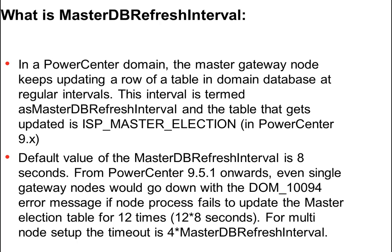From PowerCenter 9.5.1 onwards, even a single gateway node would go down with the DOM_10094 error message if the node fails to update the master election table 12 times — that is, 12 tries multiplied by 8 seconds. For a multi-node setup, the timeout is 4 multiplied by the master DB refresh interval, which is 4 times 8 seconds.